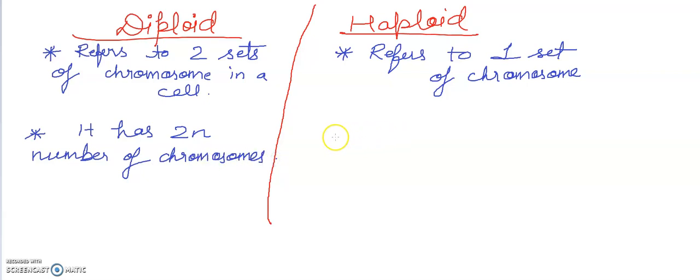And here we have a haploid cell which has n number of chromosomes, n number of chromosomes.